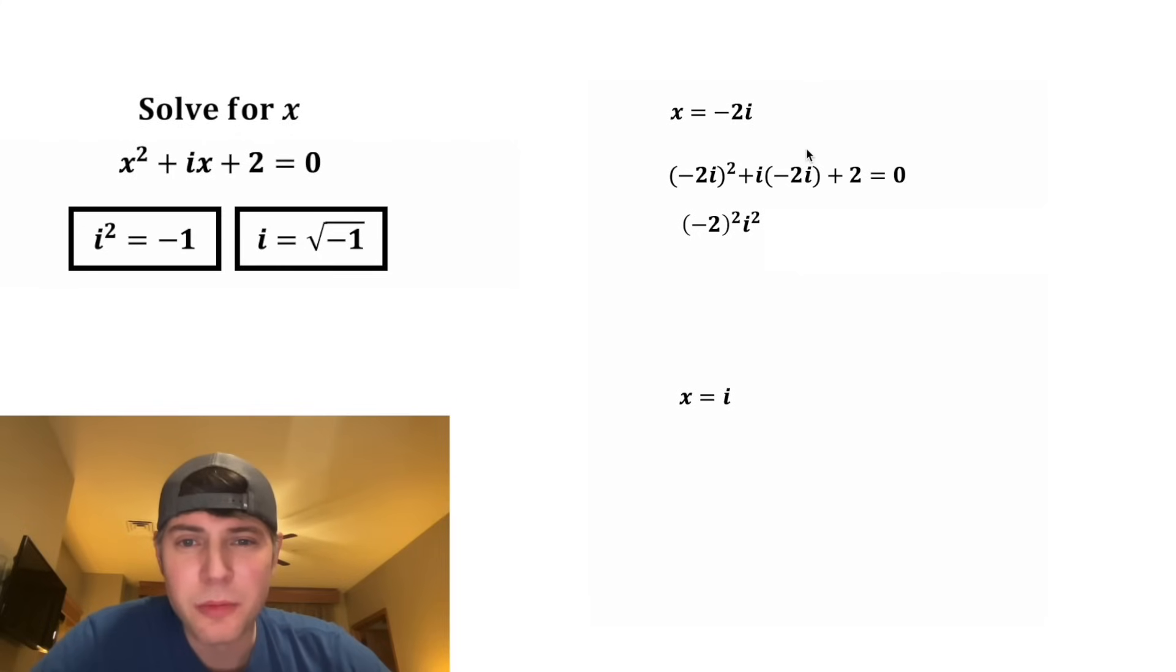And then for the second term, we can bring down the negative 2 and i times i is equal to i squared. And the rest of this can be brought down. And then before we move on, negative 2 squared is the same thing as negative 2 times negative 2, which is equal to positive 4.